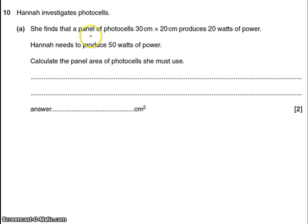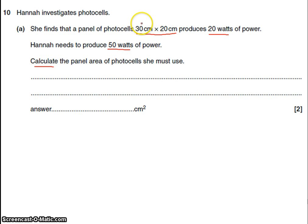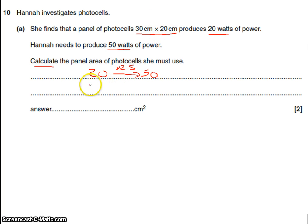This question is about photocells. Hannah finds that a panel of 30 cm × 20 cm produces 20 watts of power, and she needs to produce 50 watts. Calculate the area she must use. You look at the area Hannah has — 30 times 20 — and the power she has versus the power she needs. She has 20 and needs 50, so the multiplier is 2.5. The area of the photocell is 600 cm², and multiplying by 2.5 gives an answer of 1500 cm².